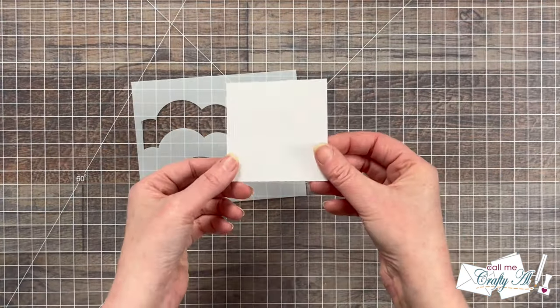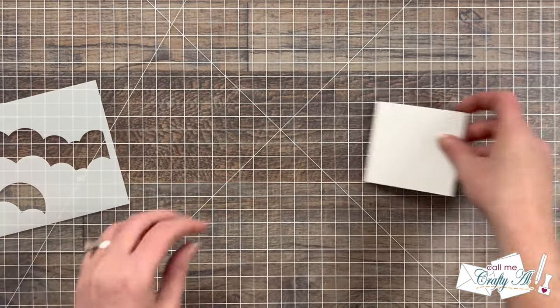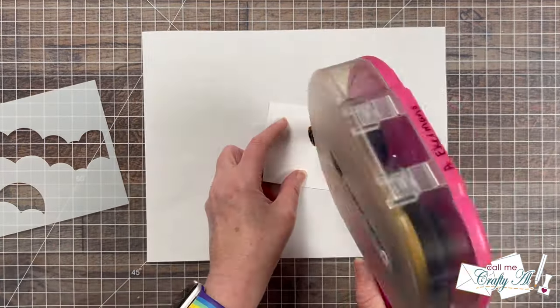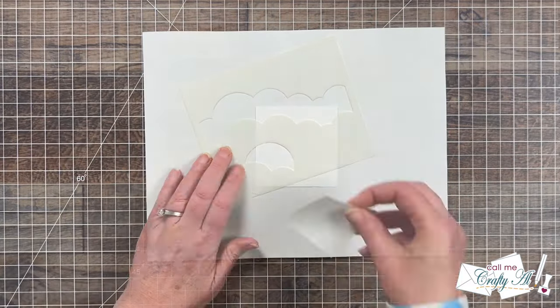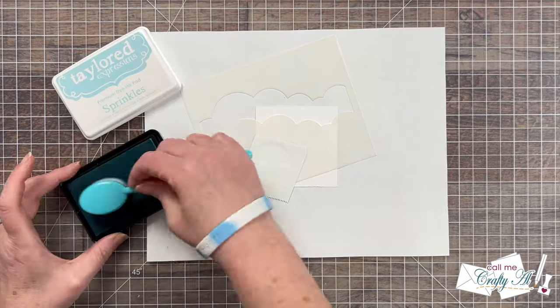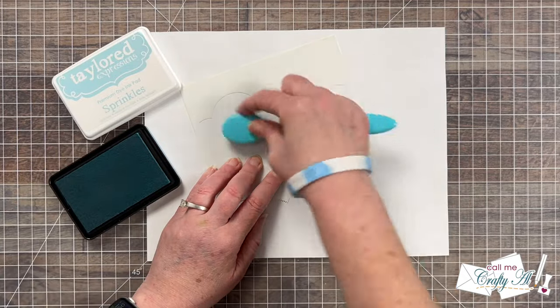While the hot air balloon dries I'm going to create a little background for it. So I cut a square of white cardstock to three inches by three inches and I am using a cloud stencil from a past club kit to create a cloudy sky background.